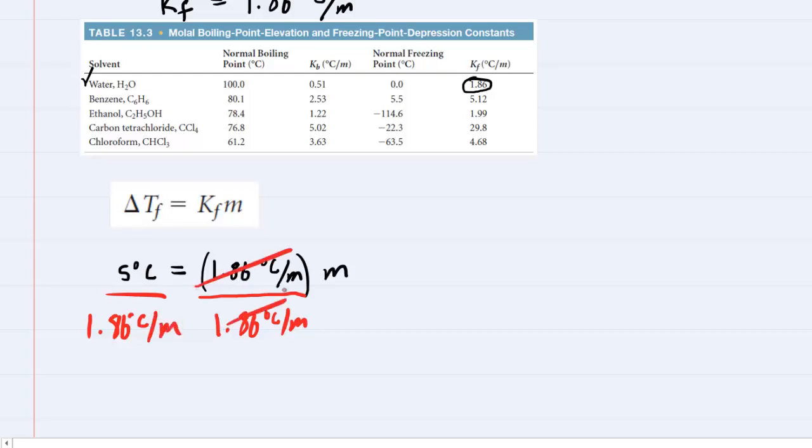They'll cancel out on the right-hand side, and on the left-hand side, when you divide this out, you're going to get about 2.69. And the units, if we look carefully, the Celsius will cancel, and that will leave you with molality or molal. So this gives us the molality of our solution.